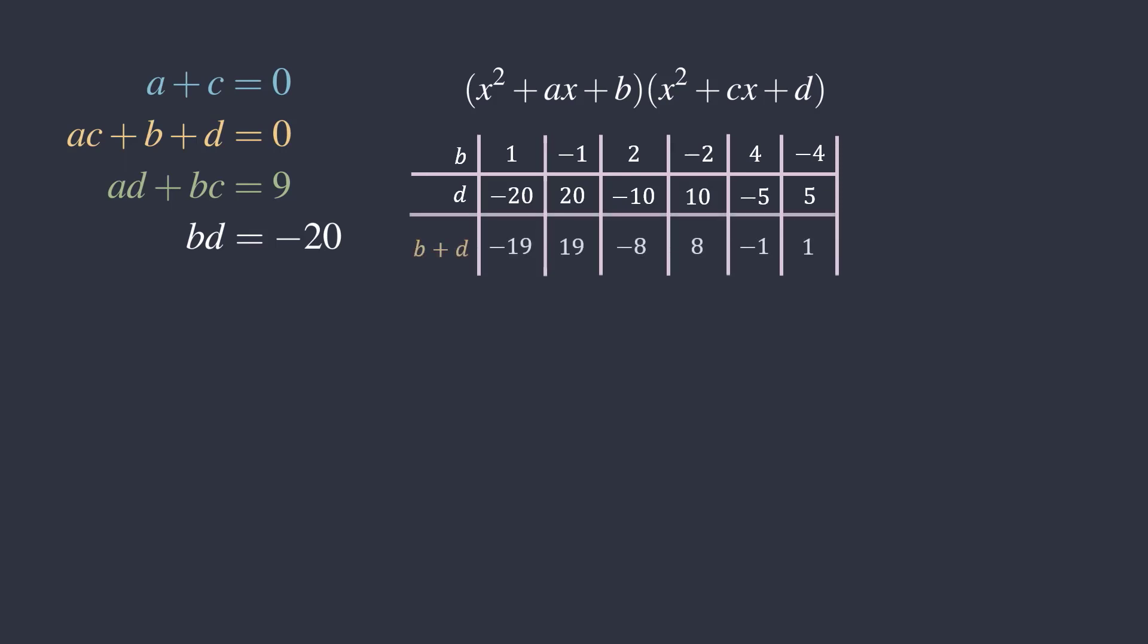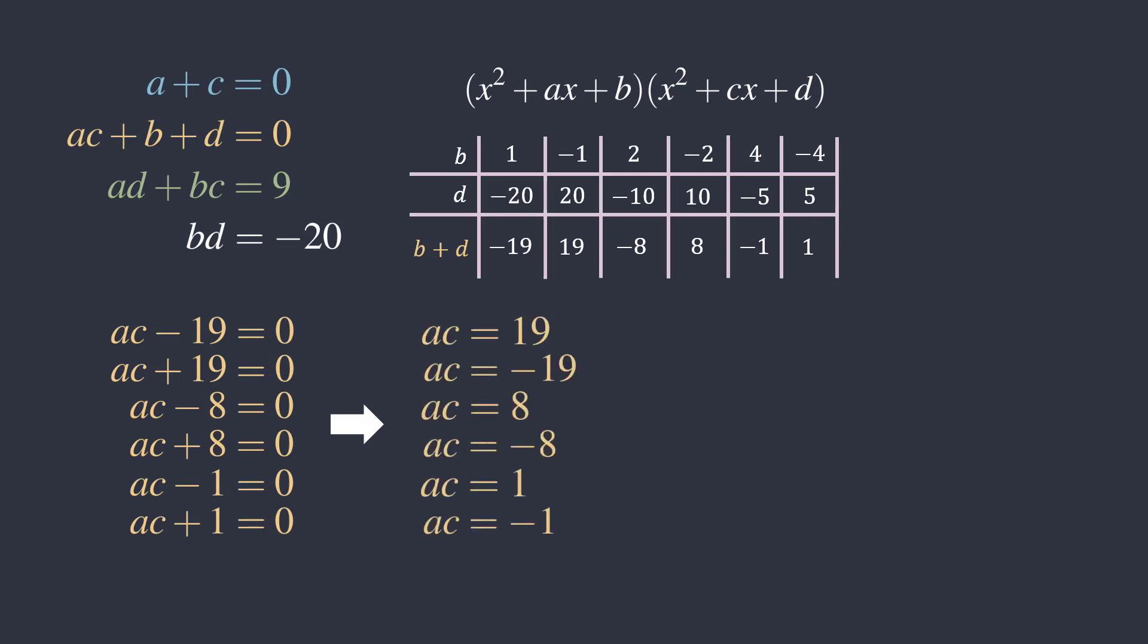Adding the b and the d in each of these possible ordered pairs, we get these sums. Plugging each of these into equation 2, we get the 6 possible values of a times c.